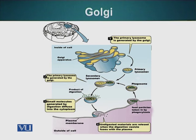Golgi apparatus is also the site where secreted proteins are enriched and sent to the lysosome, as well as to the plasma membrane. Some proteins are also specifically sent to the lysosome, which is the organelle we will talk about next.